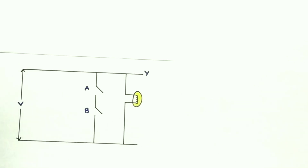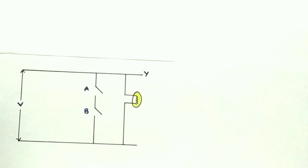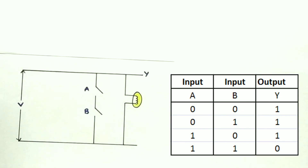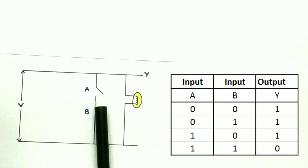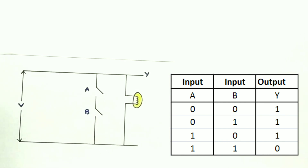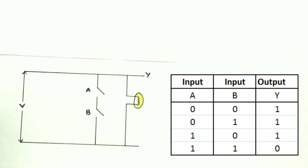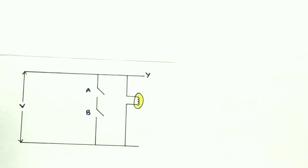Now these switches are connected in series but in a complementary fashion. The lamp glows when both are open, or when either one is open. However, whenever both switches are closed, the lamp will not glow because the current flows to ground and the output becomes zero. This circuit is behaving like a NAND gate.